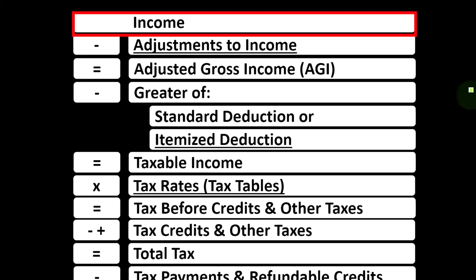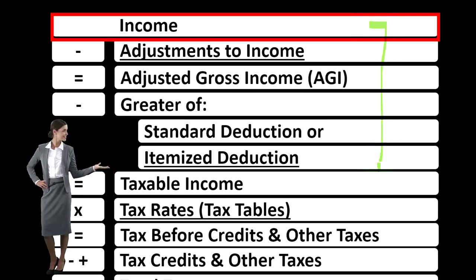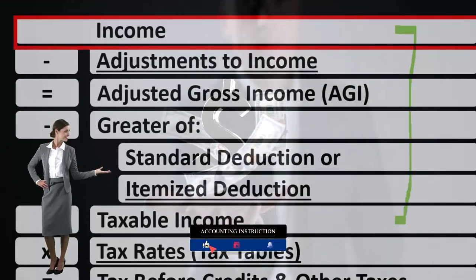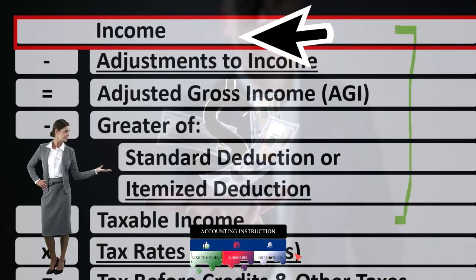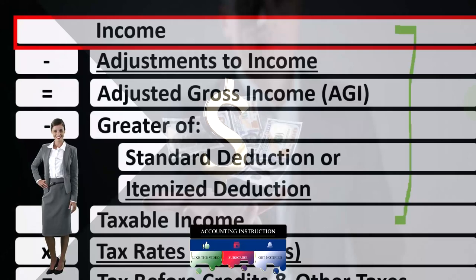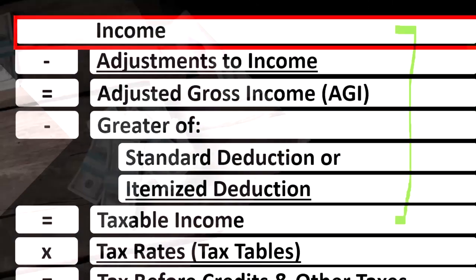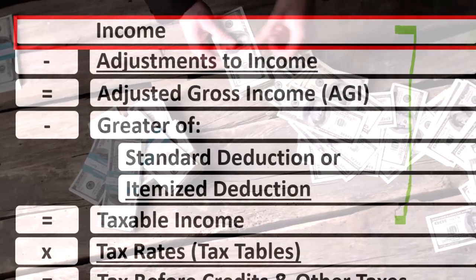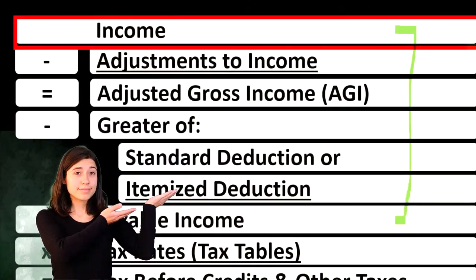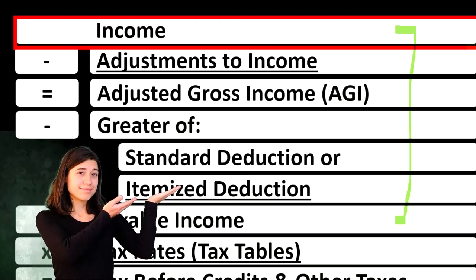When looking at the income tax formula, we're focused on line one — that being income — remembering that the first half of the income tax formula is in essence an income statement, which makes sense with an income tax. Although it's a strange income statement where we have income up top and the expenses are basically in the form of deductions to get down to not net income, but taxable income. We're focused up top on the income line, which is deceptively small here, but note that we can expand that income line to think about the vast amount of things that might be included as income and the types of things that might be able to be exempt from income.